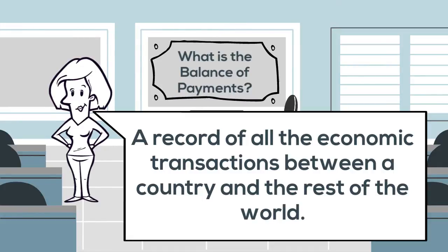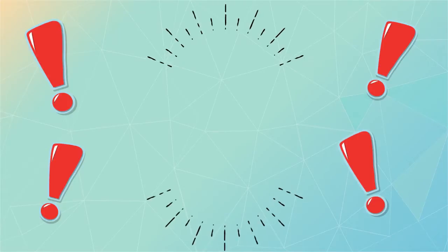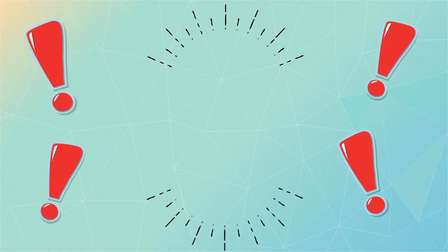This is a very important indicator of a country's external stability and sheds some light into that country's relationship with the global economy overall. Now before we can go any further, it's important to introduce some terminology. We will refer to any inflows of money into a country as a credit on the balance of payments, and any money going out of that country is known as a debit.